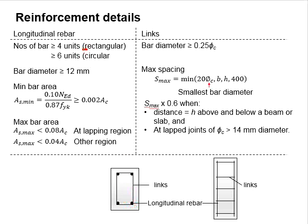As for circular columns, six units of longitudinal bar are required. The bar diameter should be at least 12 mm.